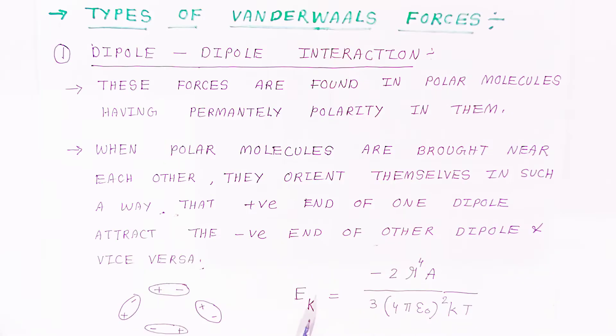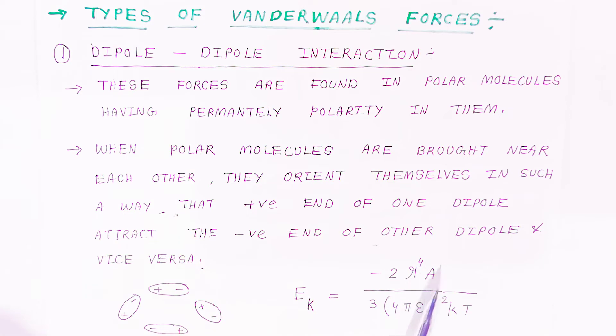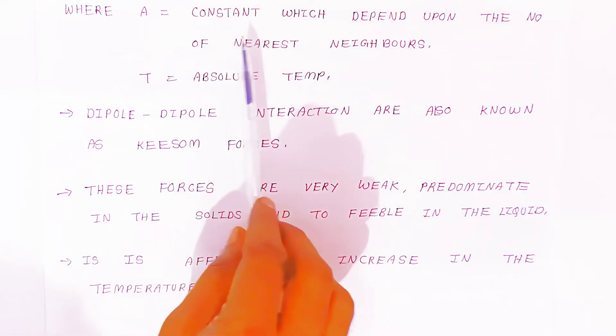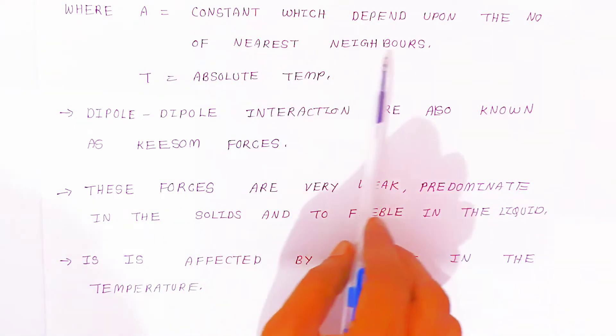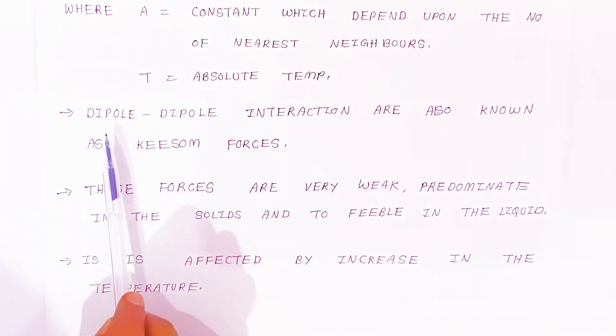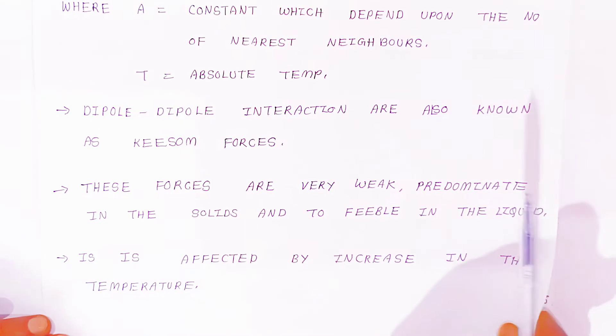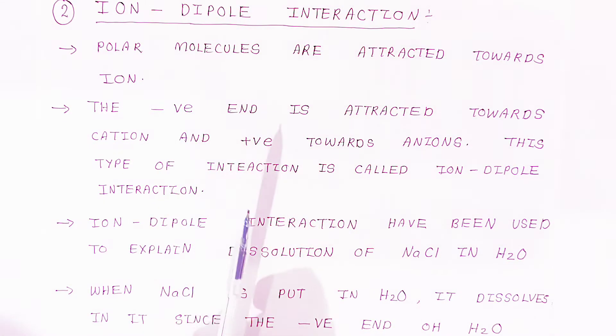The energy of attraction will be E_D = -2μ^4 A / (3 × (4π ε_0)^2 T), where A is a constant which depends upon the number of nearest neighbors and T is absolute temperature. Dipole-dipole interactions are also known as Keesom forces. These forces are very weak, predominant in the solid, feeble in the liquid. It is affected by increase in the temperature.